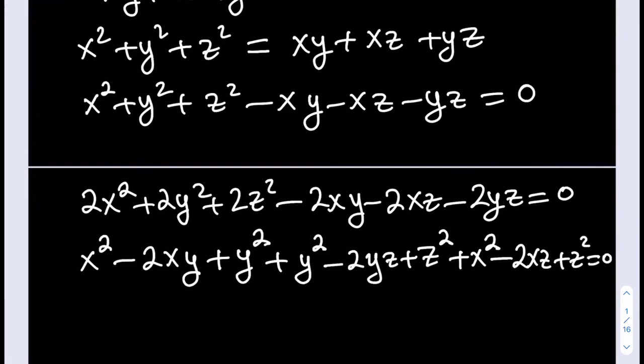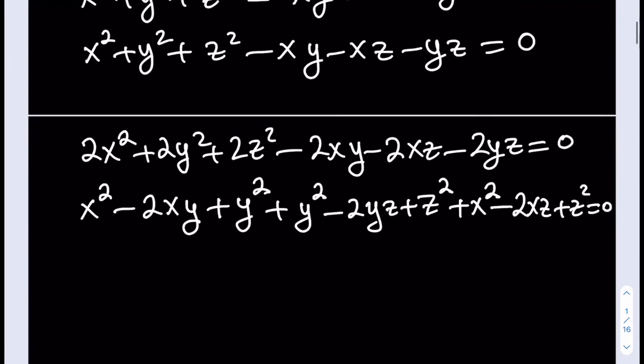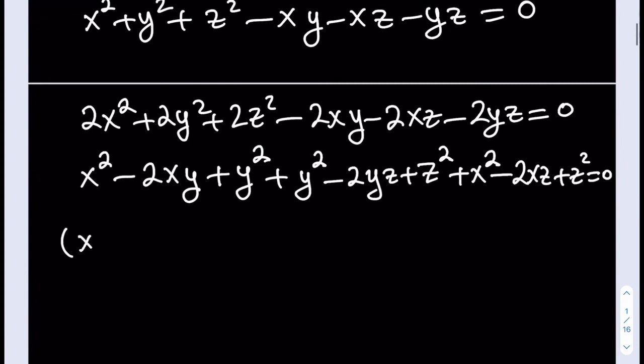Now, this expression is made up of three perfect squares. So let's go ahead and write them. So the first one is x minus y squared. The second one is y minus z squared. And the third one is x minus z squared. And the whole thing is equal to 0. Okay.